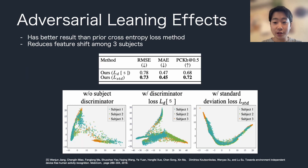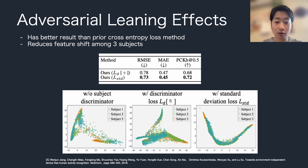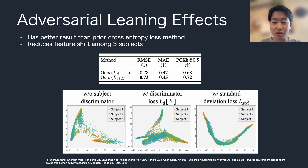This slide shows the subject discriminator module effect. Our proposed method outperformed previous work, which uses cross-entropy loss for adversarial learning. The figures shown below indicate that our adversarial learning method successfully reduces feature gaps among three subjects, which leads to better generalization ability.